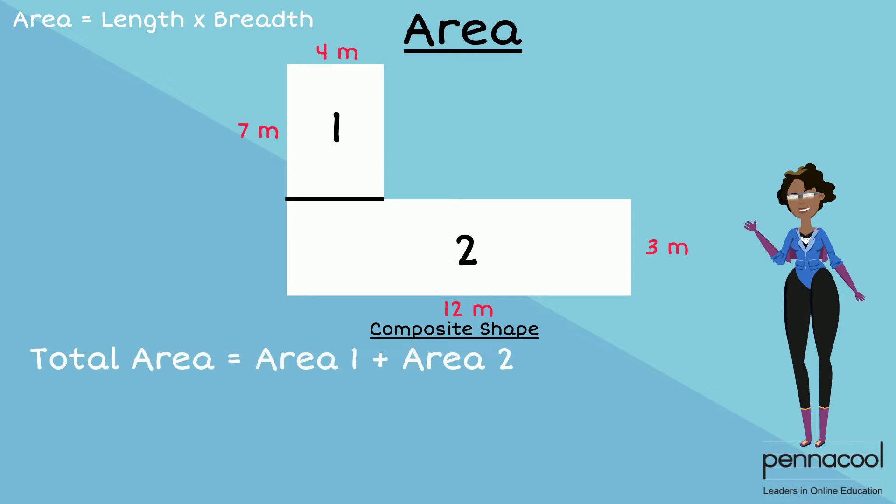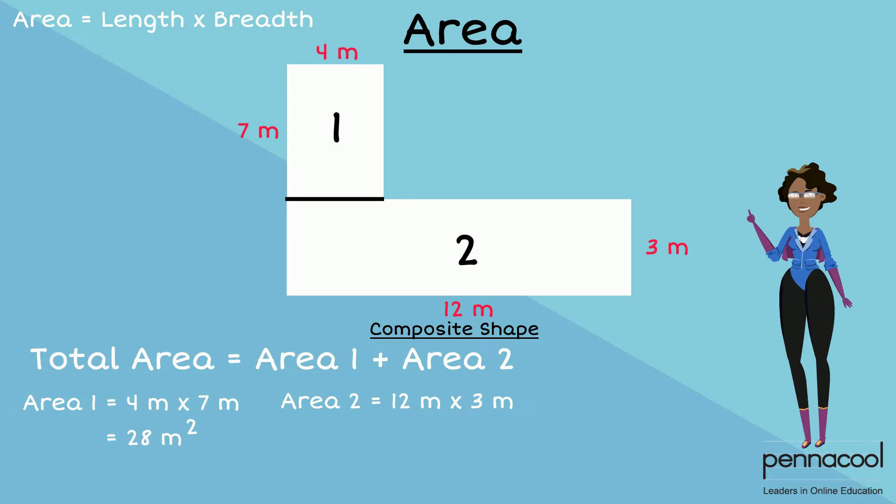We can find the area of each rectangle separately and then add the areas together. The area of the first rectangle is 4 meters multiplied by 7 meters, which gives us 28 meters squared. The area of rectangle number 2 is 12 meters multiplied by 3 meters, which gives us 36 meters squared.